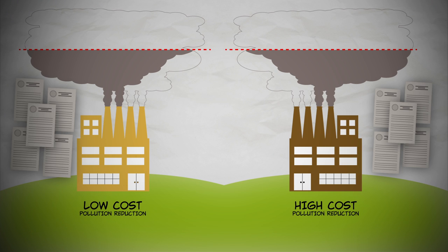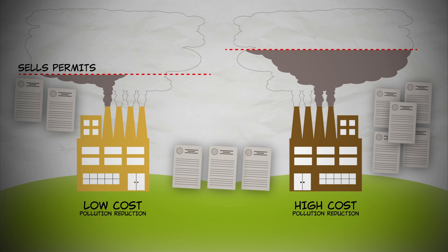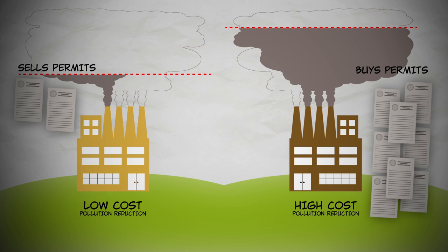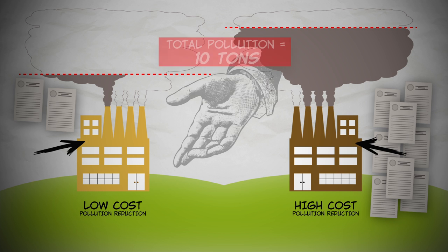So the power plant that can cheaply reduce pollution sells permits, and the power plant where it's expensive to reduce pollution buys permits. Both firms increase their profit. In this way, the invisible hand of the market gets us to the ideal solution. We reduce pollution more where reducing pollution is cheap, and less where reducing pollution is expensive. The total amount of pollution, however, is reduced just as much as with command and control.